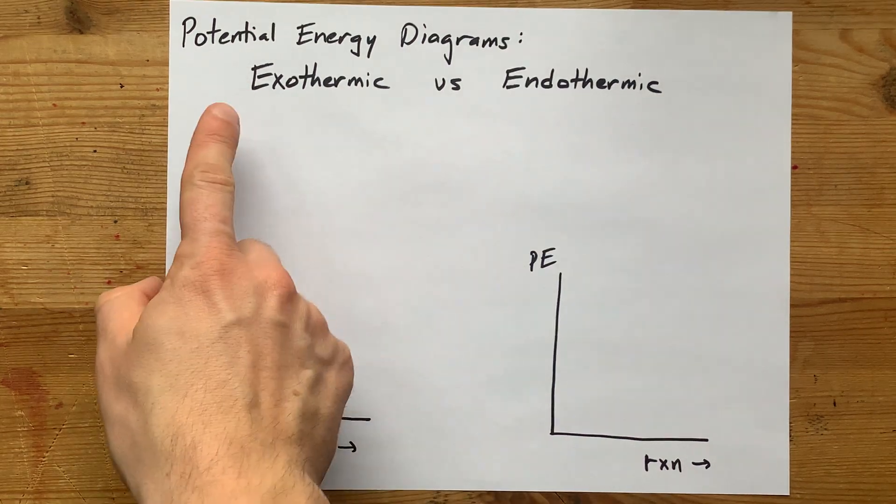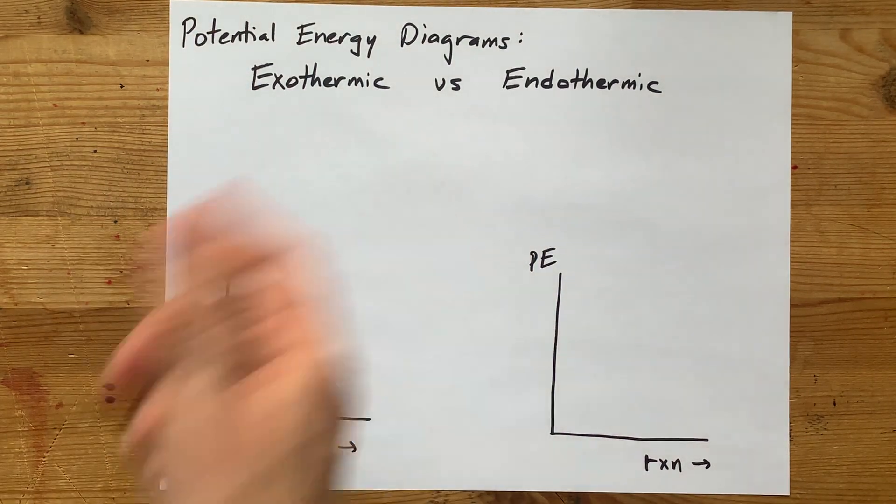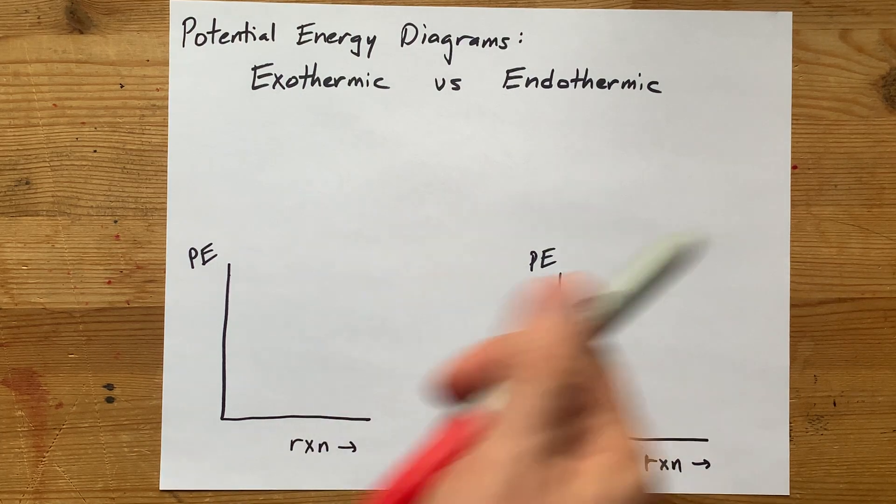How can you tell if something is exothermic or endothermic from the potential energy diagram? This is going to be quick.